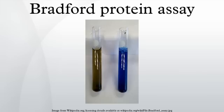The red form of Coomassie dye first donates its free electron to the ionizable groups on the protein, which causes a disruption of the protein's native state, consequently exposing its hydrophobic pockets. These pockets in the protein's tertiary structure bind noncovalently to the nonpolar region of the dye via van der Waals forces, positioning the positive amine groups in proximity with the negative charge of the dye. The bond is further strengthened by the ionic interaction between the two.